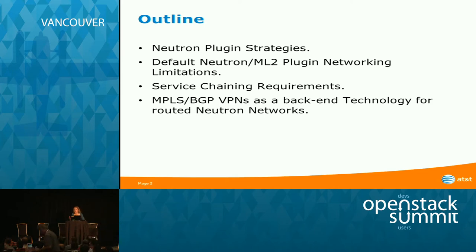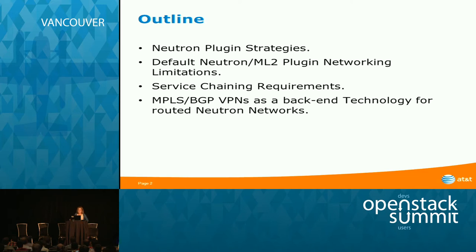Yesterday there was a talk on Neutron 101, so I removed that content since it was already covered. I'll talk about some networking limitations in default Neutron with ML2 which, in my opinion, prevent doing really scalable service chaining, and then about service chaining requirements.